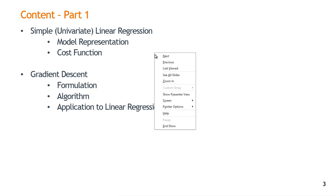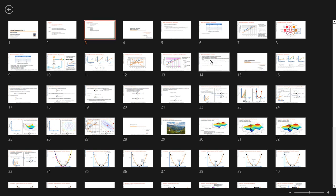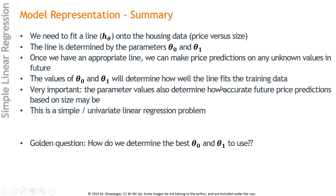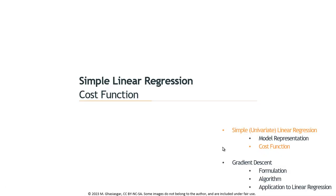So let's go on to the next part, which is the cost function. This was the summary: we fit a line to the housing data, which related price to size. The line was determined by two parameters — the intercept and the slope — and the intercept and slope determine how well the line fits, so we want to find these. How do we determine the best intercept and slope to use? We'll talk about the cost function.